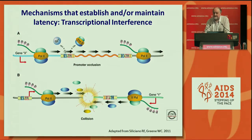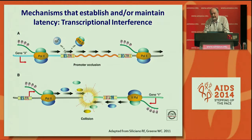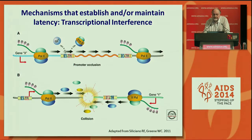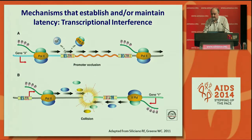One of the major mechanisms of the establishment and/or maintenance of latent infection is transcriptional interference. If HIV is integrated into a gene in the same orientation as that gene, you can get what's called promoter occlusion. With the strong upstream cellular promoter, and we know that HIV is generally integrated into transcriptionally active genes, that strong upstream cellular promoter can prevent binding of Pol II to the HIV promoter and therefore prevent transcription.